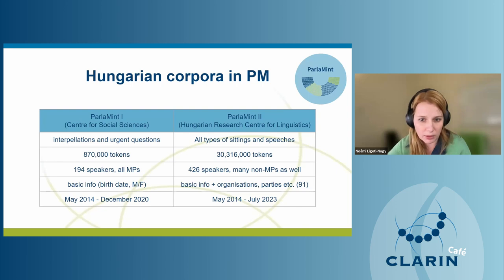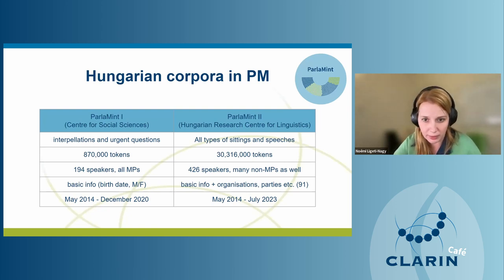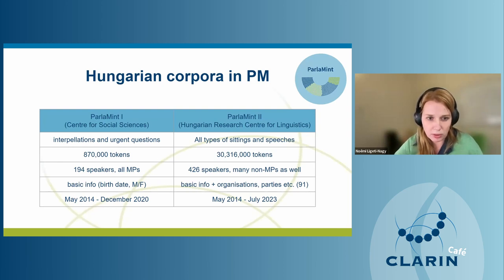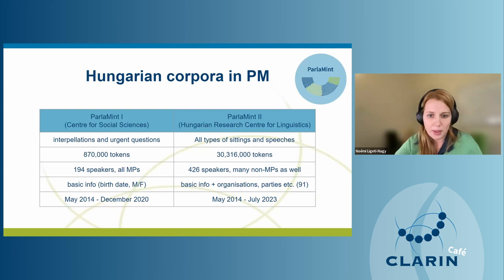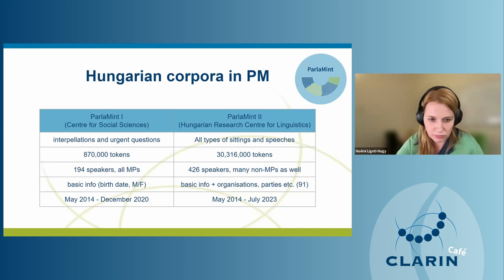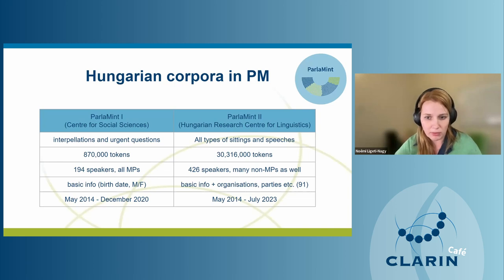In ParlaMint 2, we at the Hungarian Research Center for Linguistics took over. This second corpus expands the scope to include all types of settings and speeches — significantly larger with over 30 million tokens. It features a wider array of 426 speakers, including not only MPs but also non-MPs, and goes beyond basic demographics to include organizations, parties, and other affiliations totalling 91 different entities. The time frame extends from May 2014 to July 2023.